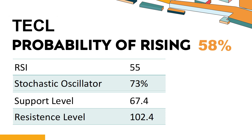The current stochastic oscillator of TECL is 73%. When the stochastic oscillator stays between 50 and 80, it may indicate that the stock is experiencing a mild downtrend with some selling pressure. In this case, an oversold signal could indicate that a stock is reaching a potential buying opportunity.